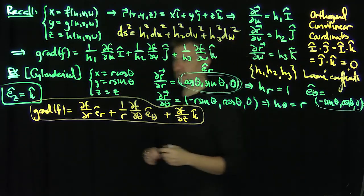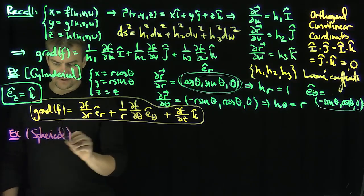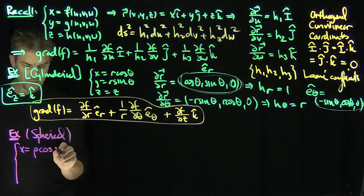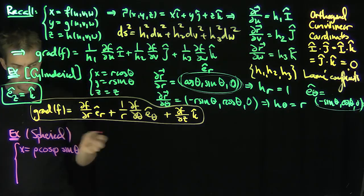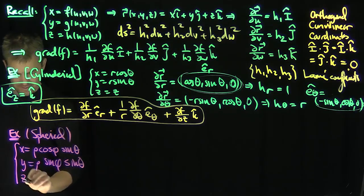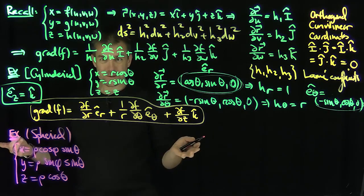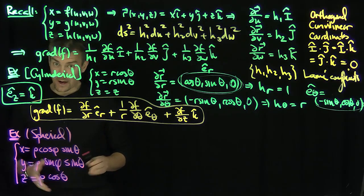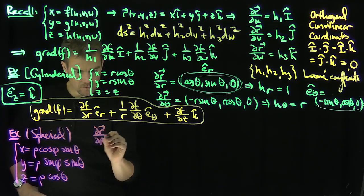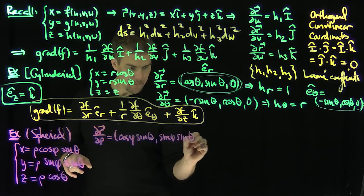Let's do spherical coordinates now. Using the physics definition of spherical coordinates: x equals ρ cos φ sin θ, y equals ρ sin φ sin θ, and z equals ρ cos θ, where θ is the latitude direction. So partial r partial ρ is (cos φ sin θ, sin φ sin θ, cos θ). It turns out this is a unit vector since the components squared sum to 1, so h_ρ equals 1, and I call this vector e_ρ-hat.